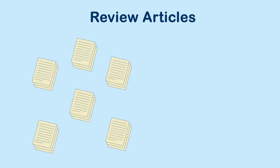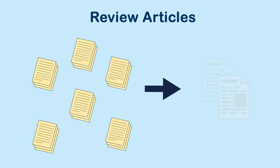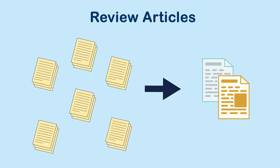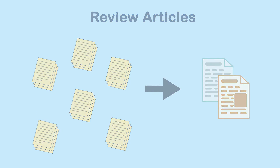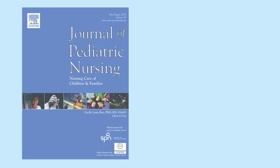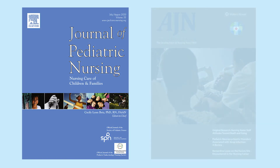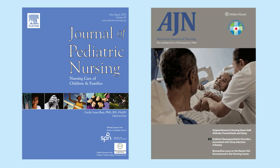Review articles cover a topic in great detail and examine all research on that topic. Examples of scholarly journals in the health sciences include the Journal of Pediatric Nursing and the American Journal of Nursing.